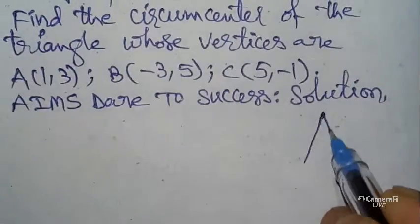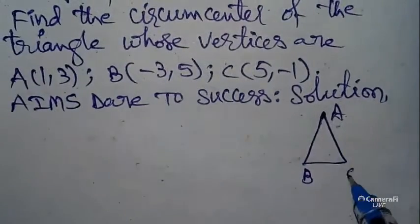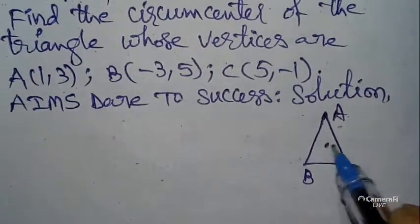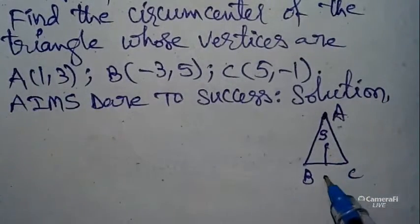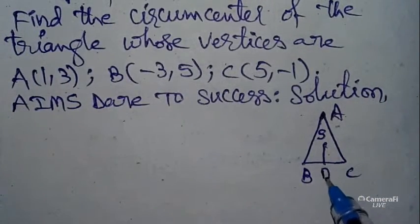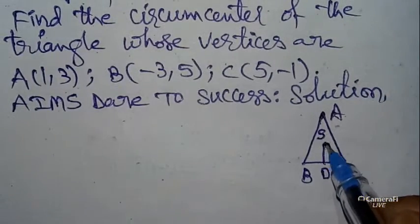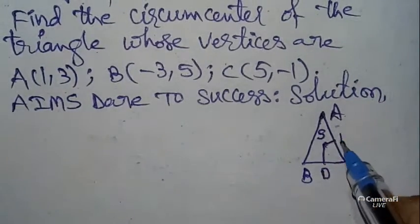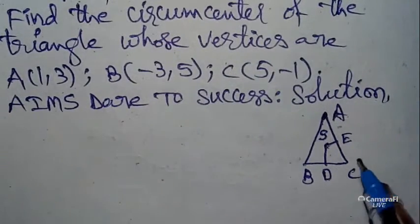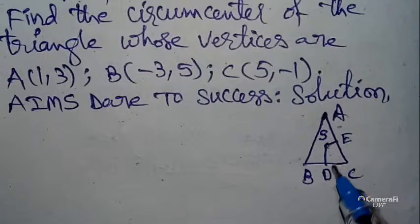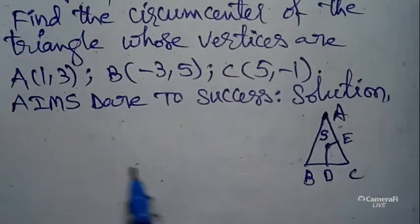Take a triangle ABC and take center S. From center S to side BC, you can take one line — that intersecting point you can take as D. From center S to side AC, you can take a line — that intersecting point is E. So SD is perpendicular to BC and SE is perpendicular to AC.